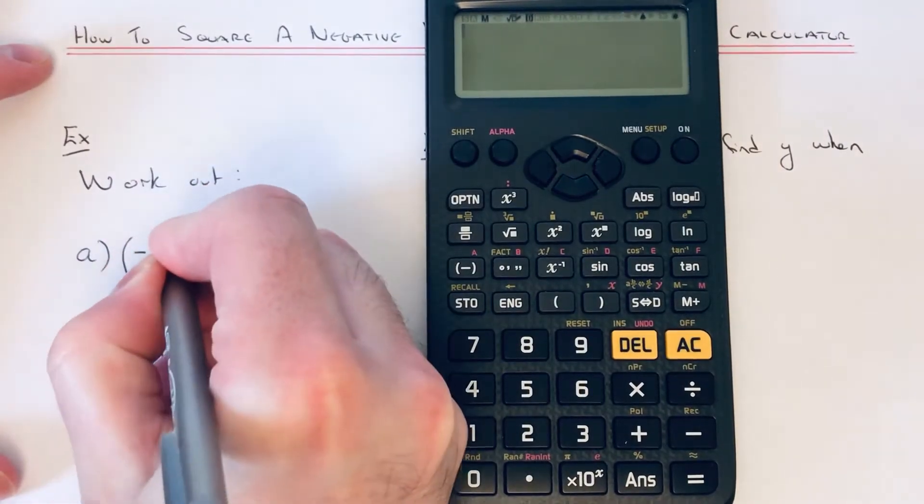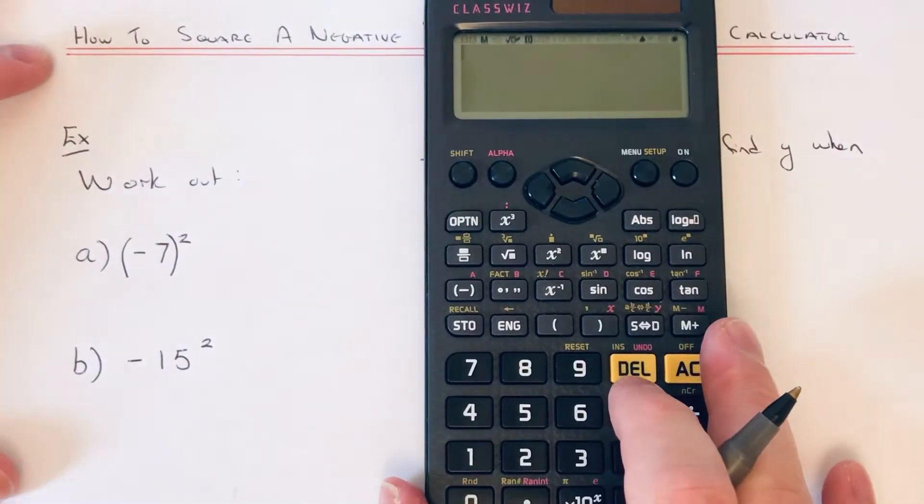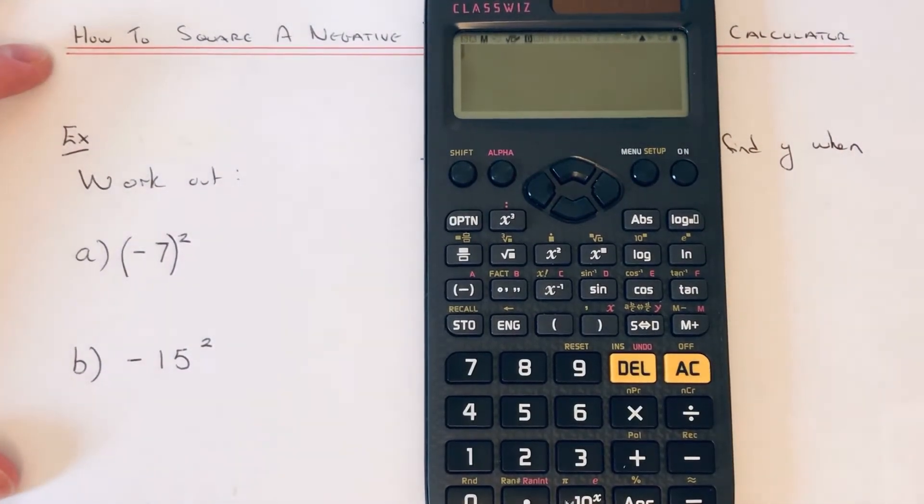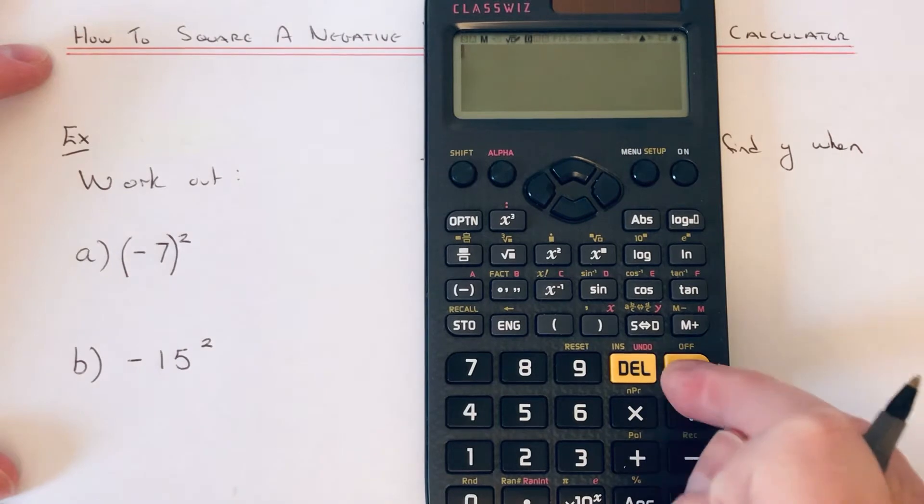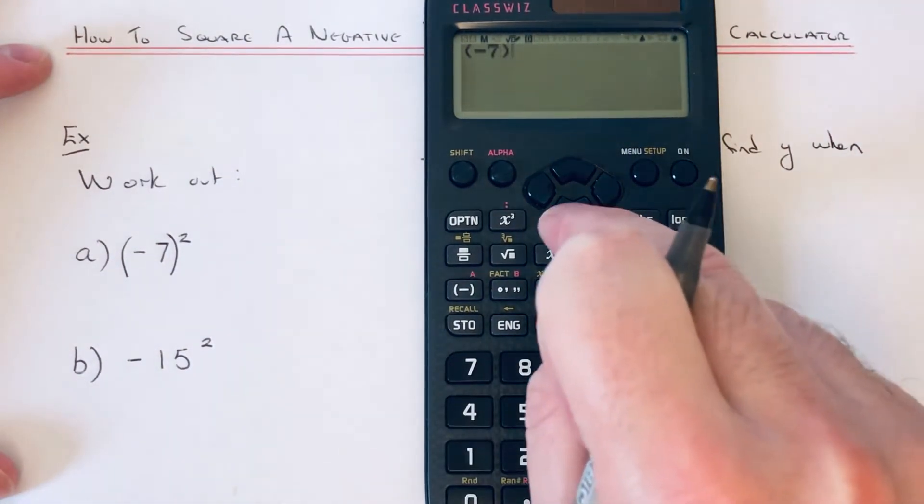The reason why it's giving the wrong answer is because you need to put a bracket around that minus 7. It's not squaring the minus 7, it's only squaring the 7 and putting the negative in the final answer. So if we put brackets around that minus 7 and then press x squared, we get the correct answer of 49.